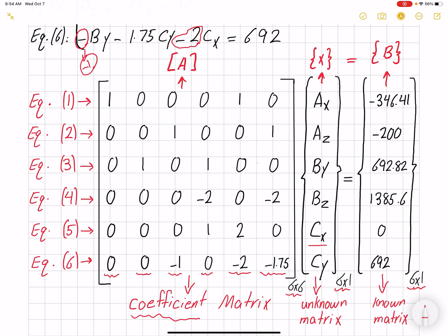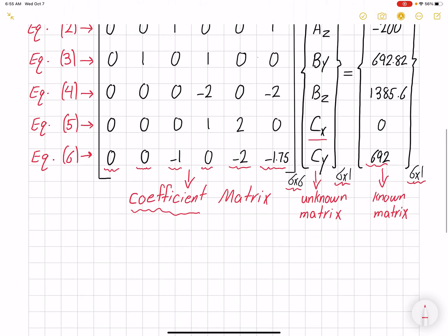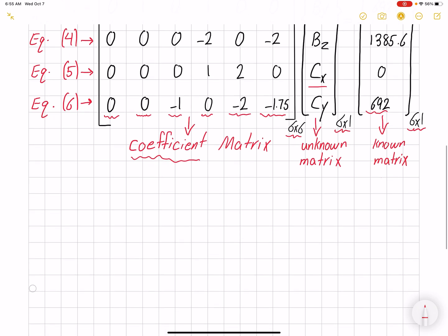Cy equals, we have 692, so we write 692 on the other side. So we do the same procedure for all the equations.